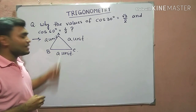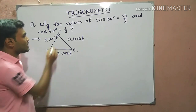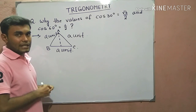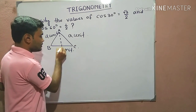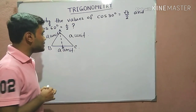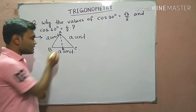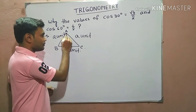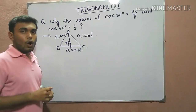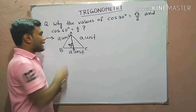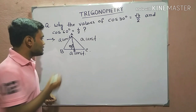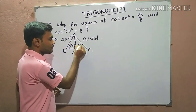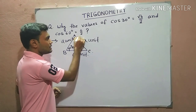So for having the right angle triangle, we are drawing a perpendicular from the vertex A to the base BC, which cuts BC at the point D. That means this angle is becoming 90 degrees. Now all of us know that the angles of an equilateral triangle are 60, 60, and 60 degrees.